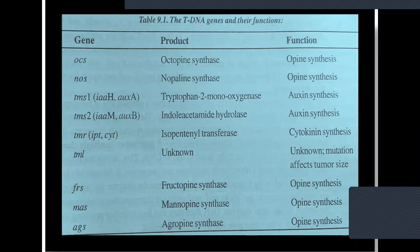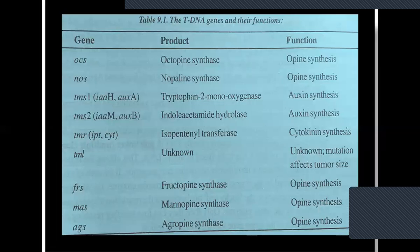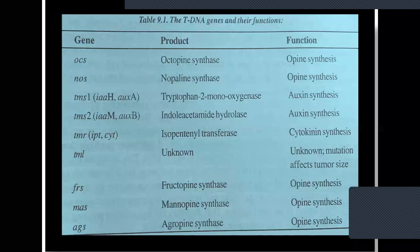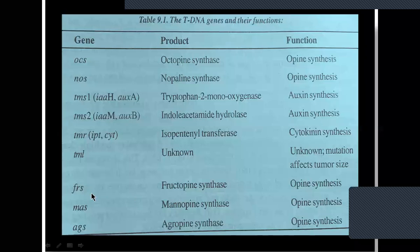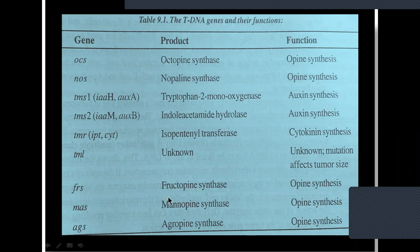TMR, which is IPT or CYT, is responsible for the production of isopentenyl transferase and thus responsible for cytokinin synthesis. As already understood, the balanced condition of auxin and cytokinin is responsible for callus. Similarly, when the bacteria infect the plant genome and integrate the T-DNA, the equal production of auxin and cytokinin is responsible for the crown gall disease. Crown means the junction between the root and shoot region. tms1, tms2, and tmr cause that particular crown gall disease.